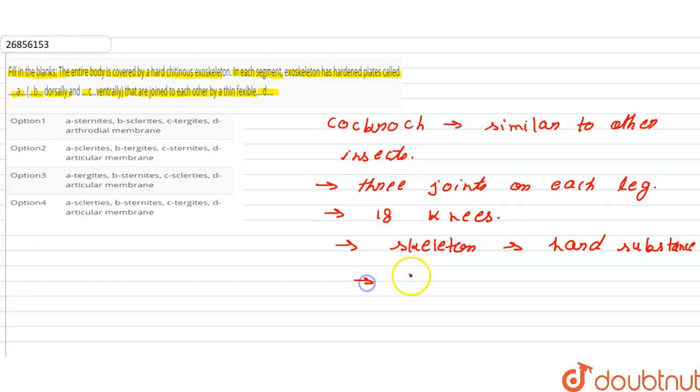Now here, the skeleton is present outside of the body. We call this an exoskeleton. So the entire body is covered by a hard cutaneous exoskeleton, which has hardened plates.